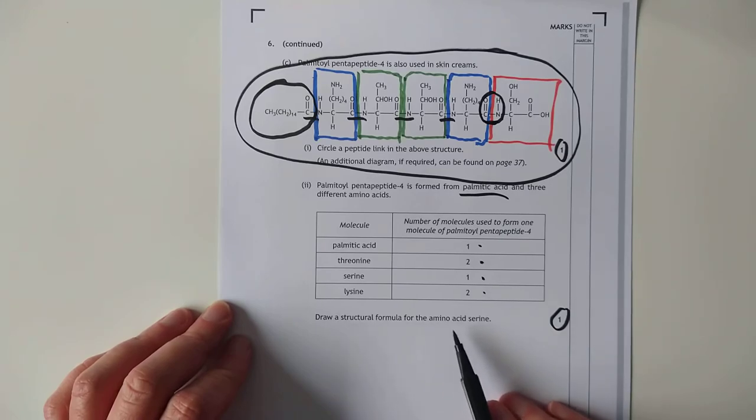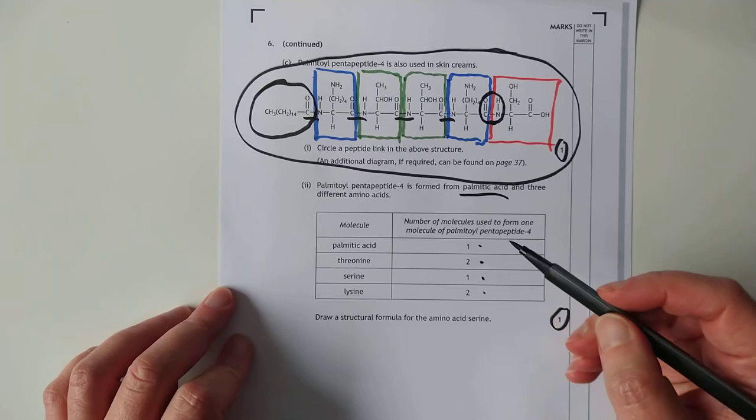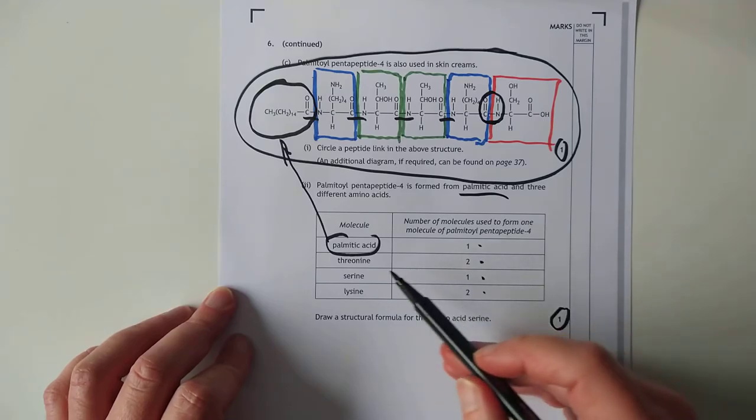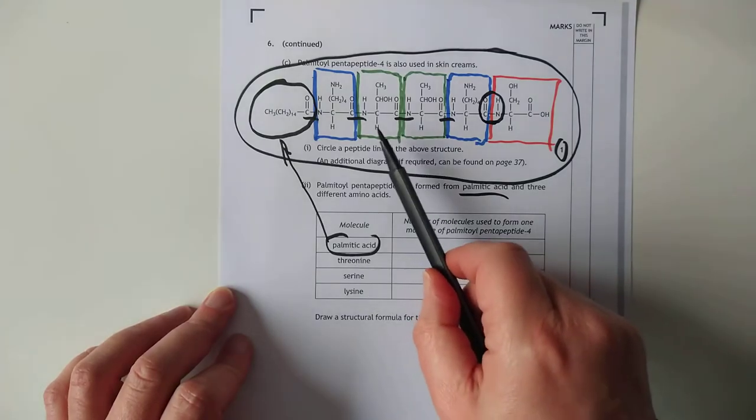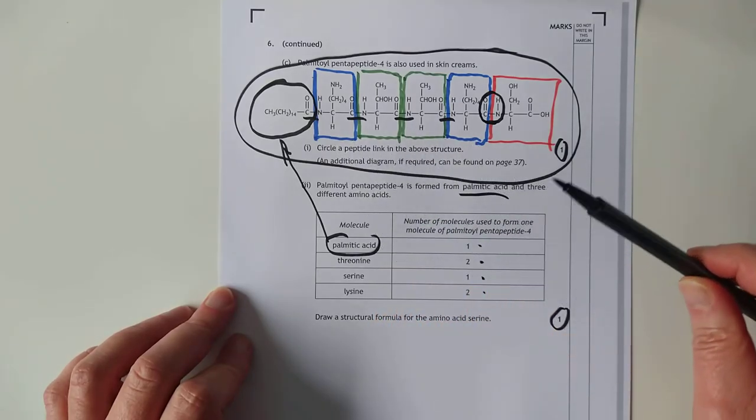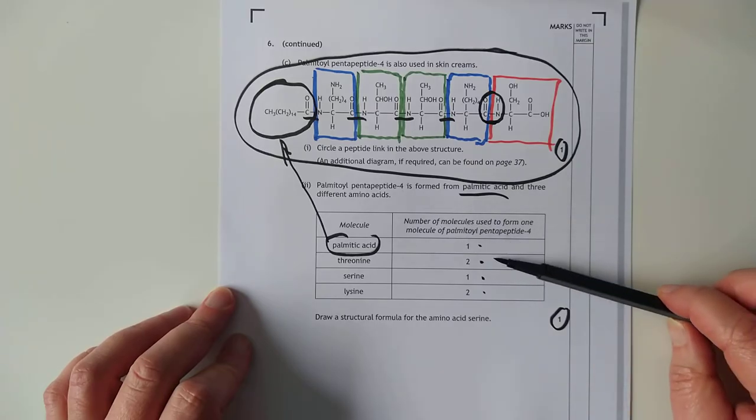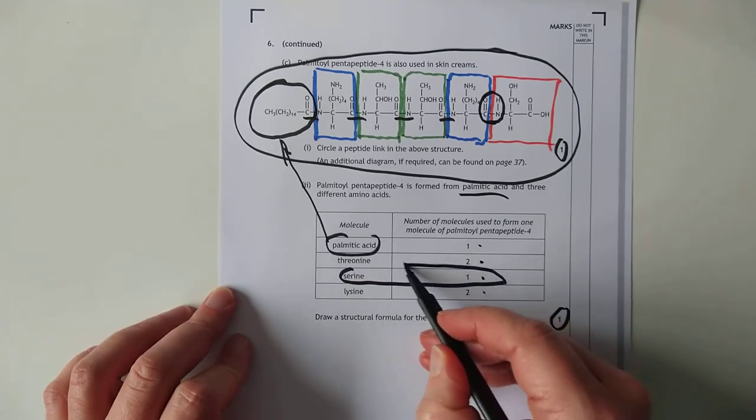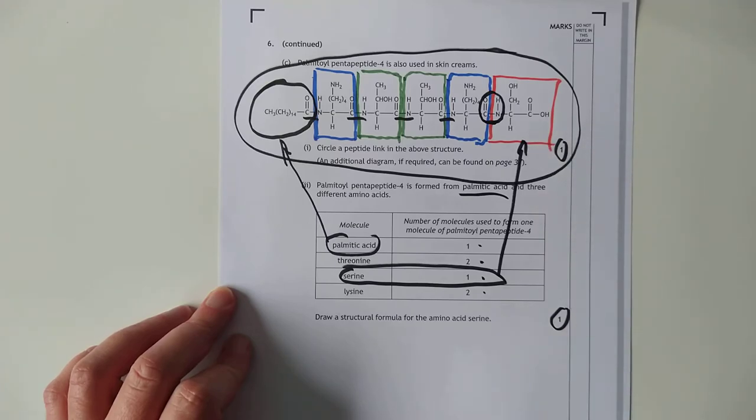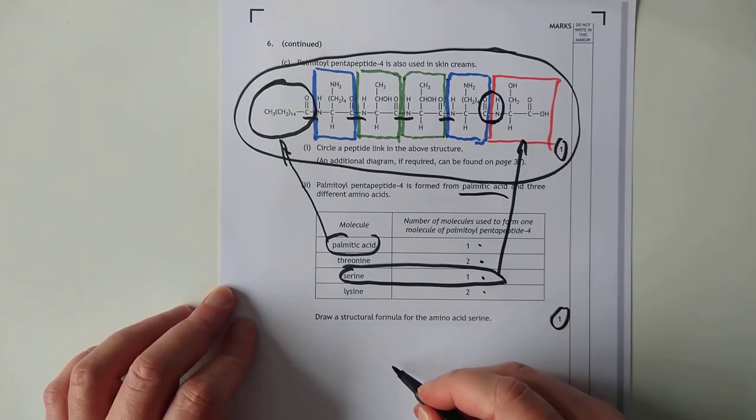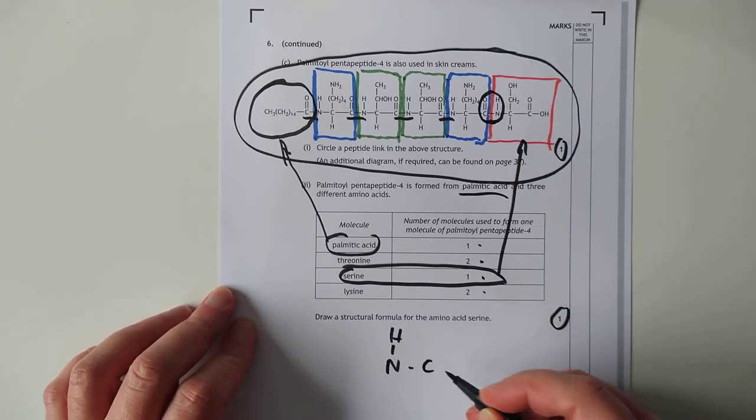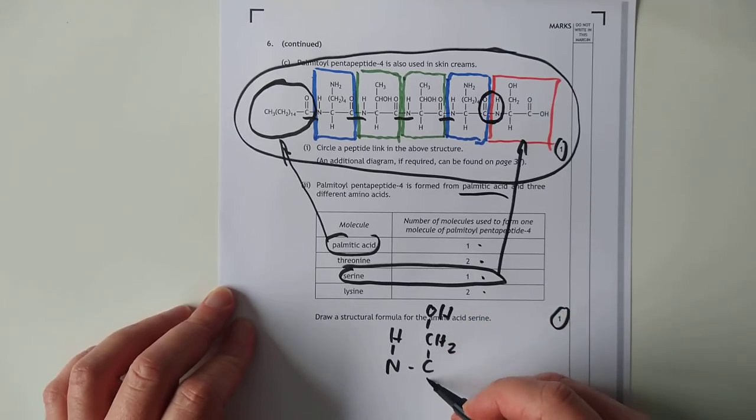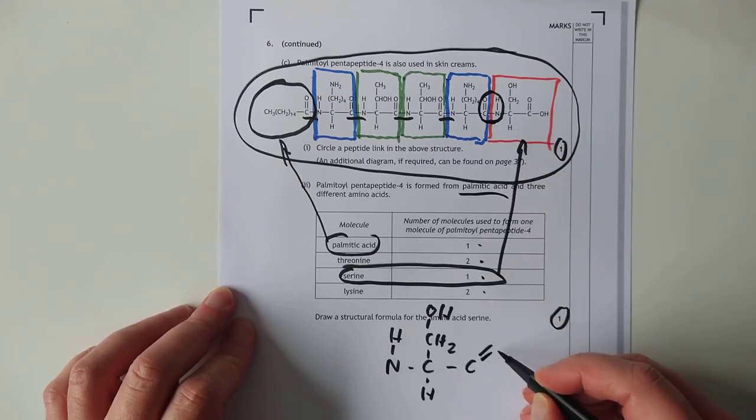Now, draw a structural formula for the amino acid serine. How on earth are you supposed to know that? Well, the clue here is if this is the palmitic acid, there's two molecules of threonine, there's two molecules of lysine. There's only one molecule of serine. There's two greens. There's two blues. So one of these is threonine and the other one is lysine. But it doesn't matter because they're asking about the single one, serine, which means it's got to be that. So if we have a look at the details here, we have got an N and an H. We've got the C here. We've got connected to CH2 and then OH and then just H at the bottom. And then here's the carboxyl end of our amino acid.